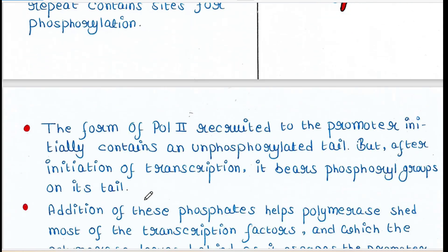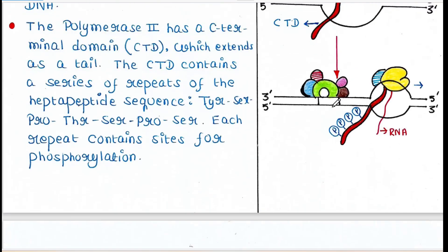The form of polymerase 2 recruited to the promoter initially contains an unphosphorylated tail. But after initiation of transcription it bears phosphoryl groups on its tail.